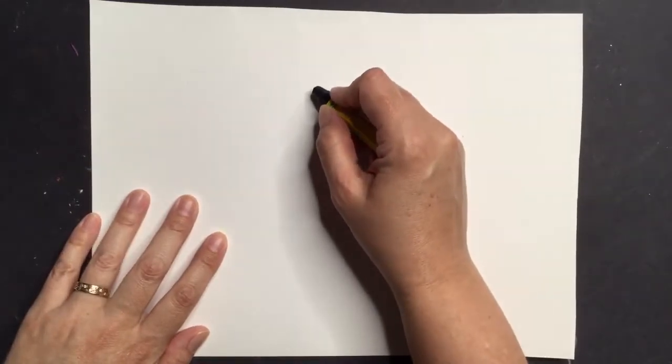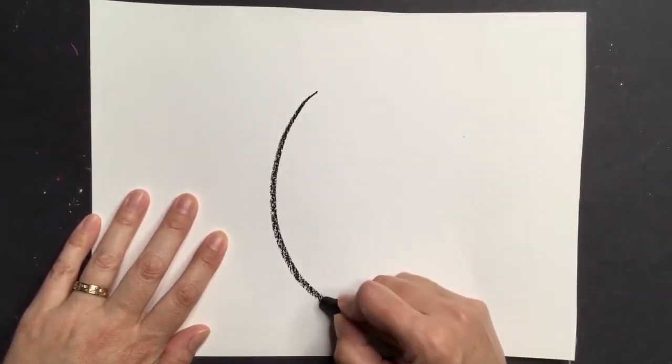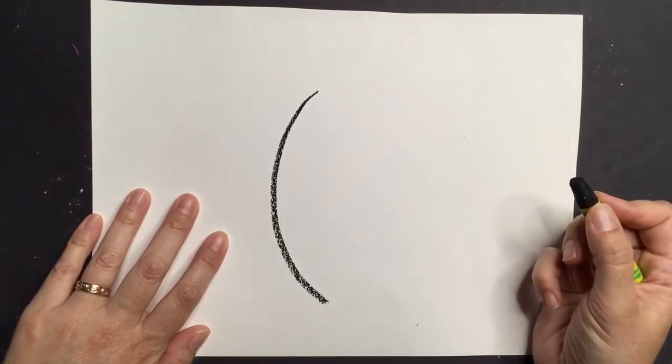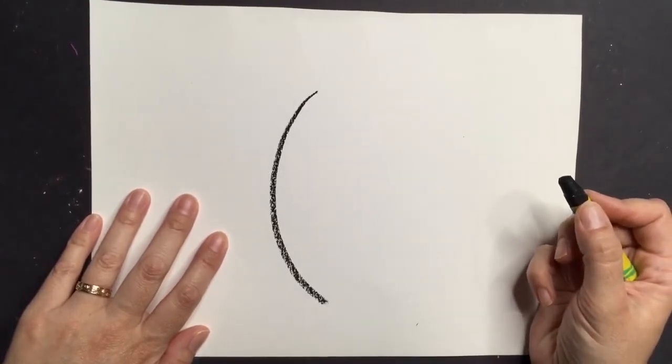First, let's draw the pumpkin. Start with a curvy line like this. Primero dibujemos la calabaza. Comienza con una línea curva como esta.